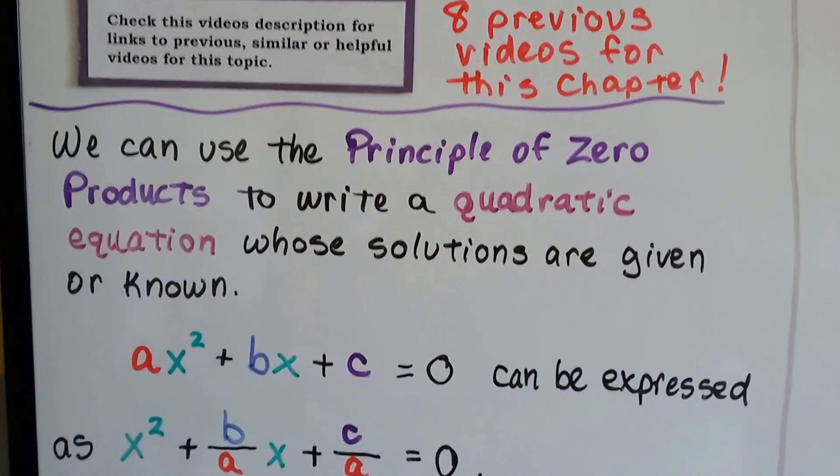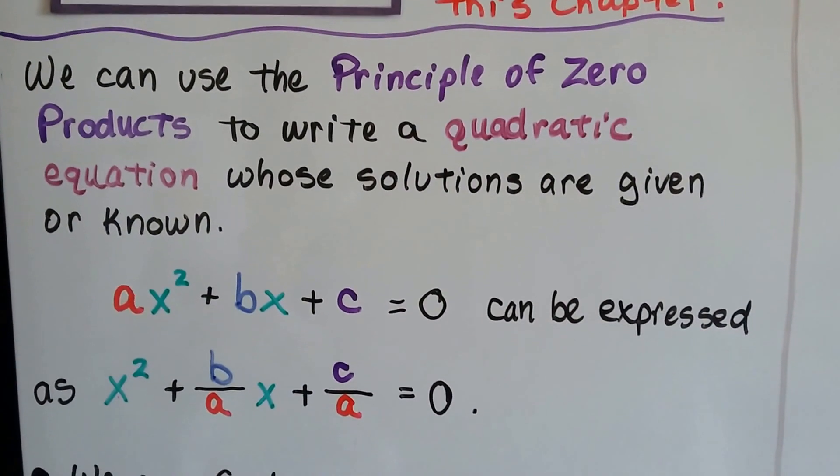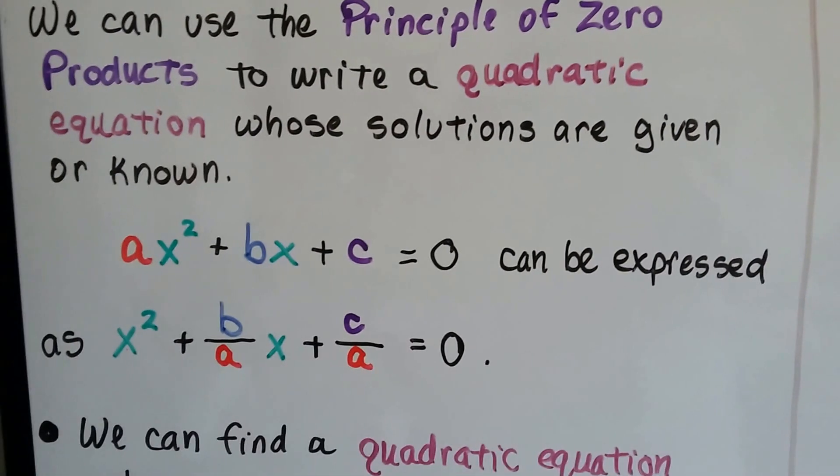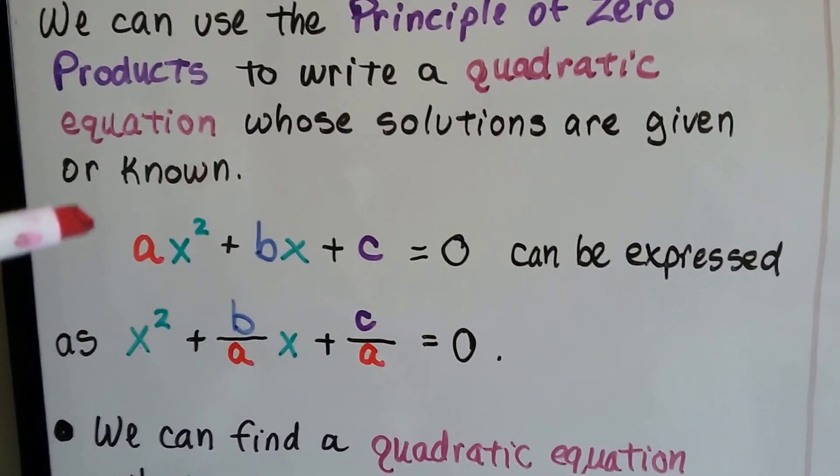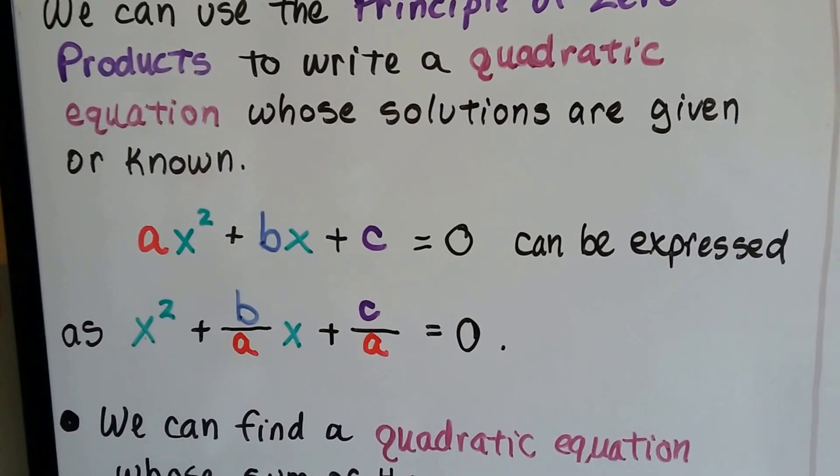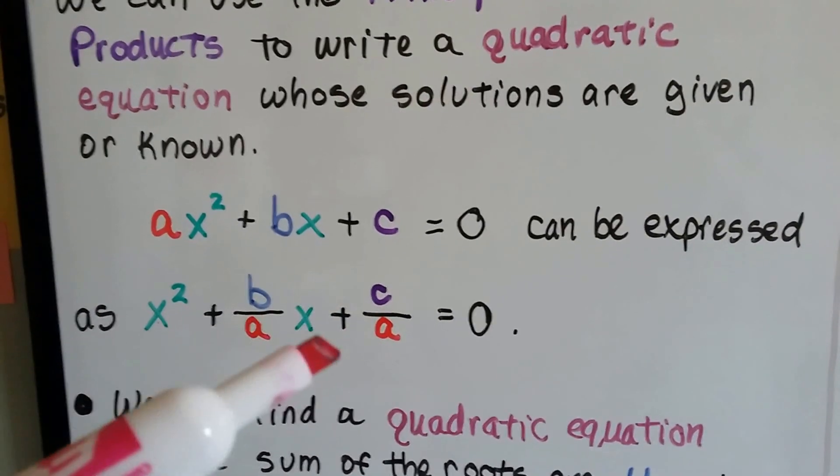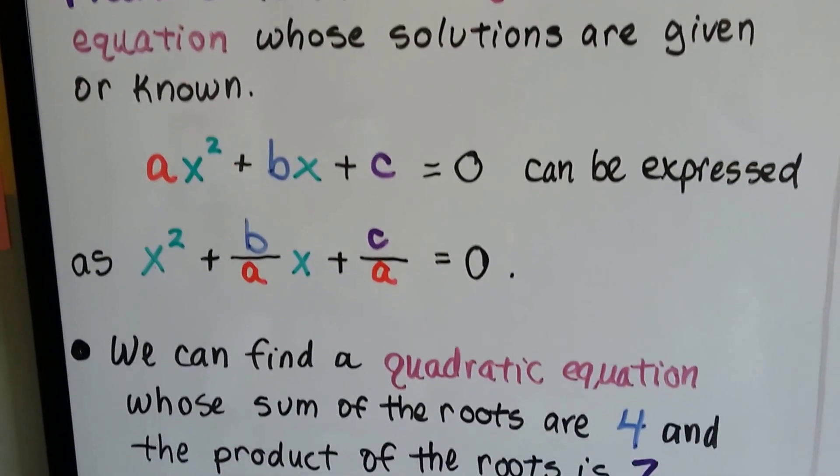We can use the principle of zero products to write a quadratic equation whose solutions are given or known. Here we've got a quadratic equation in standard form, ax² + bx + c = 0, and it can be expressed as x² + (b/a)x + (c/a) = 0.